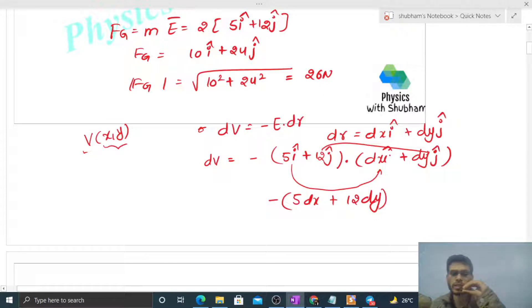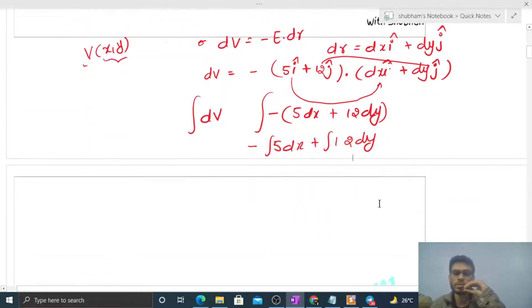Taking the integration: V = -∫(5dx + 12dy). The integration of dx is x and integration of dy is y, so we get V = -(5x + 12y) plus a constant.